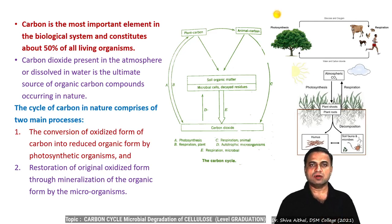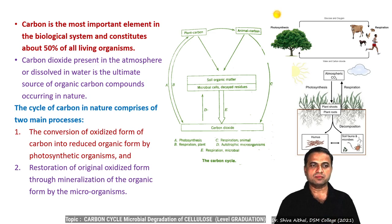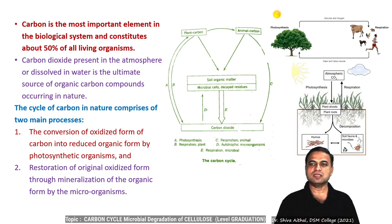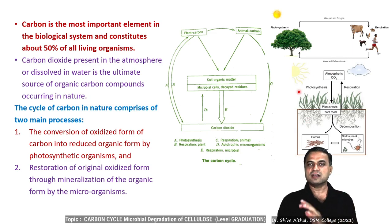As we saw in our last discussion, carbon is one of the most important elements in biological systems, constituting 50 percent of all living organisms. Carbon dioxide is present in the atmosphere, and two main processes — photosynthesis and respiration — balance and govern the recycling of carbon. Two processes are significant: conversion of the oxidized form of carbon into reduced organic form by photosynthetic organisms, and restoration of the oxidized form through mineralization of organic carbon by microorganisms.